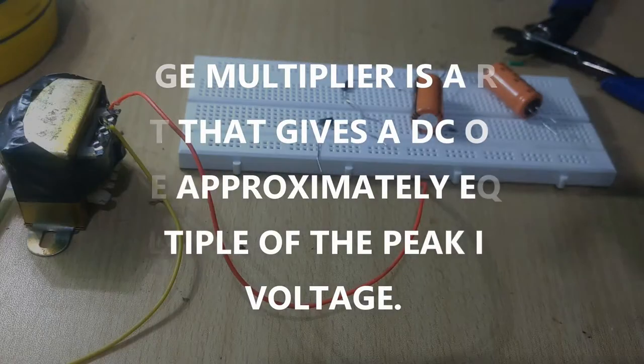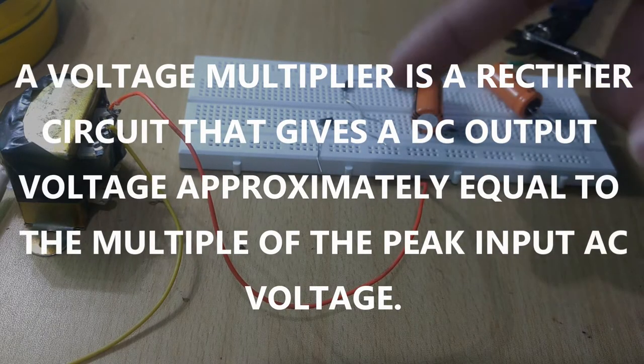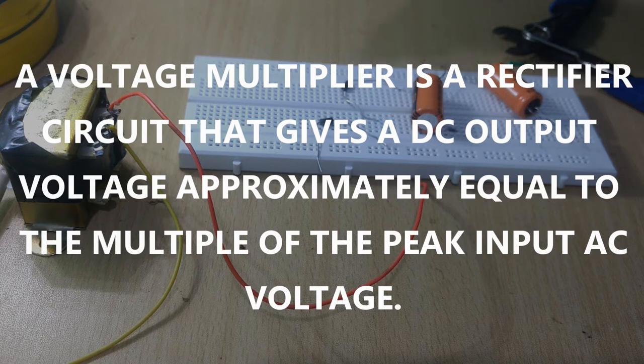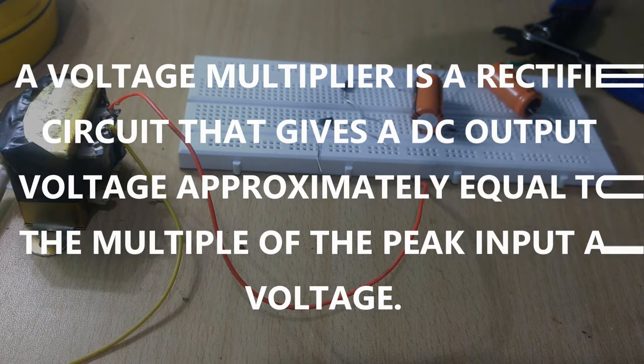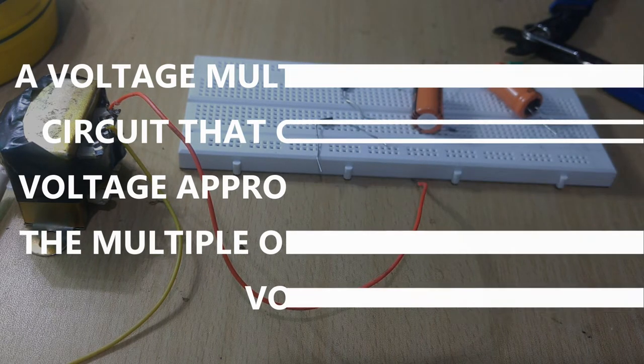A voltage multiplier is a rectifier circuit that gives a DC output voltage approximately equal to the multiple of the peak input AC voltage.